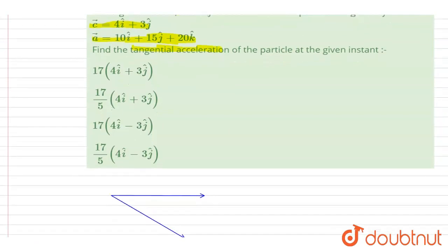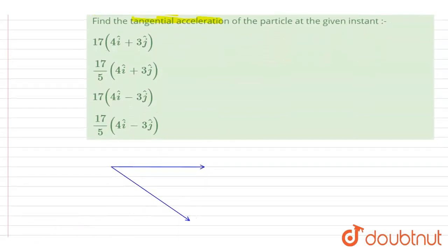If you see, this is the velocity vector, and if I say this is the acceleration vector, the component which is along v will be the tangential one. So if I say this angle is theta, then a cos theta will be the tangential acceleration.